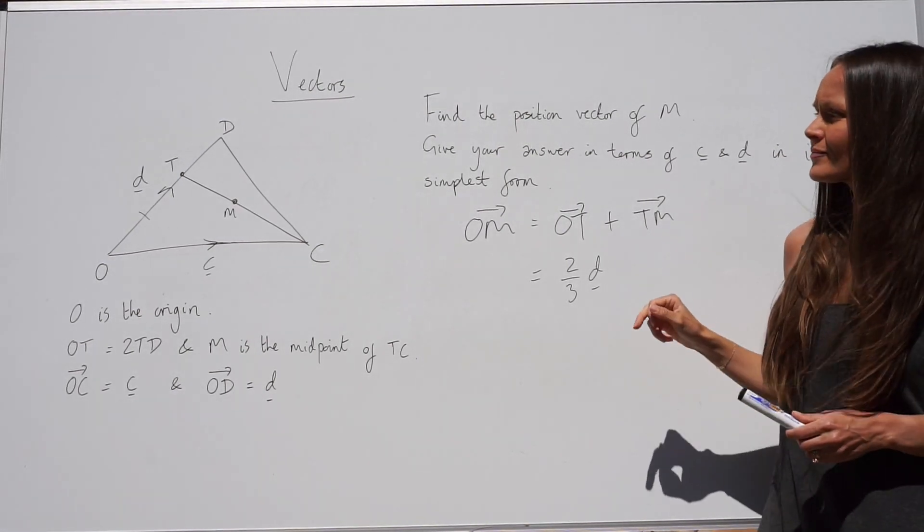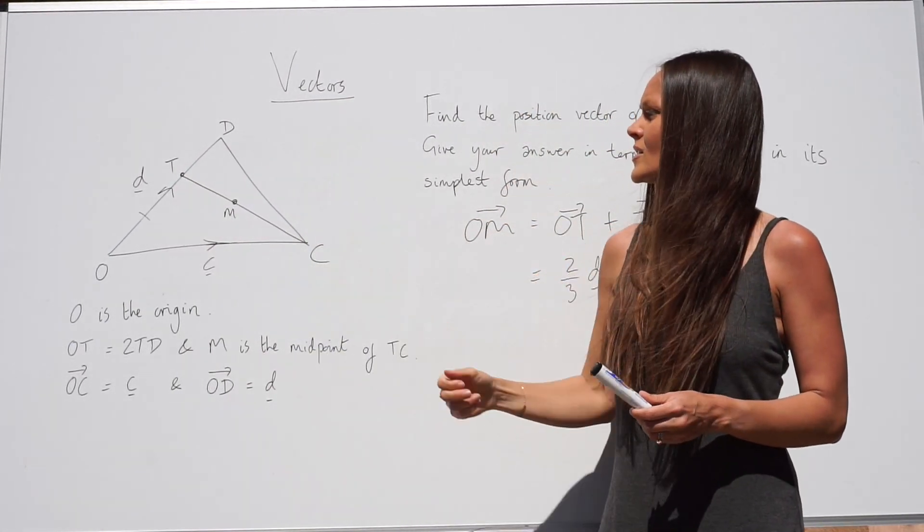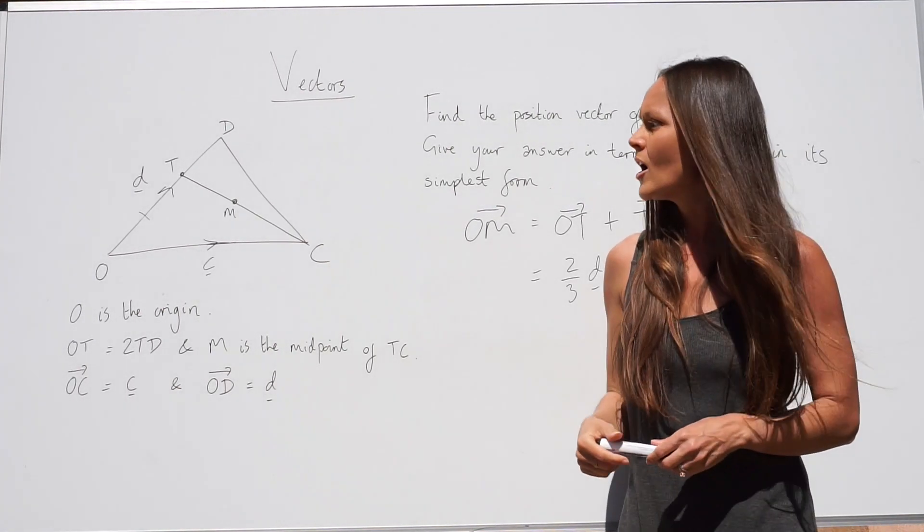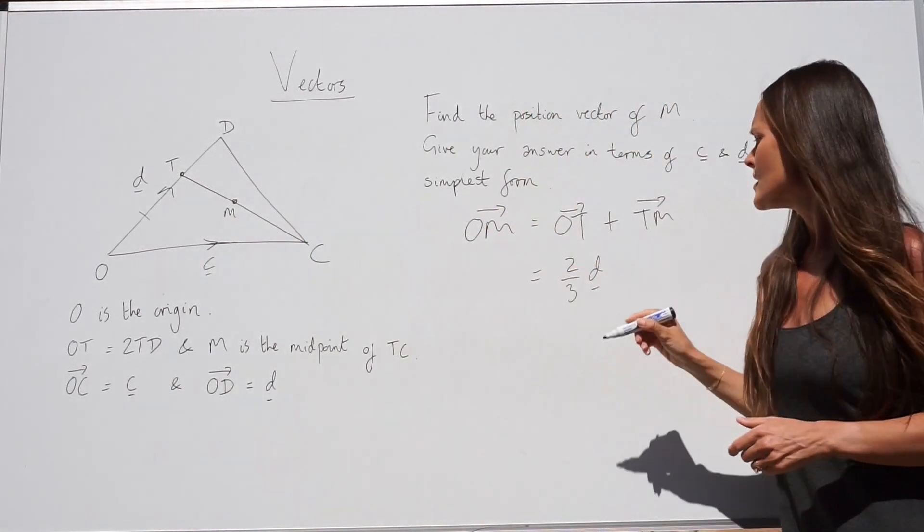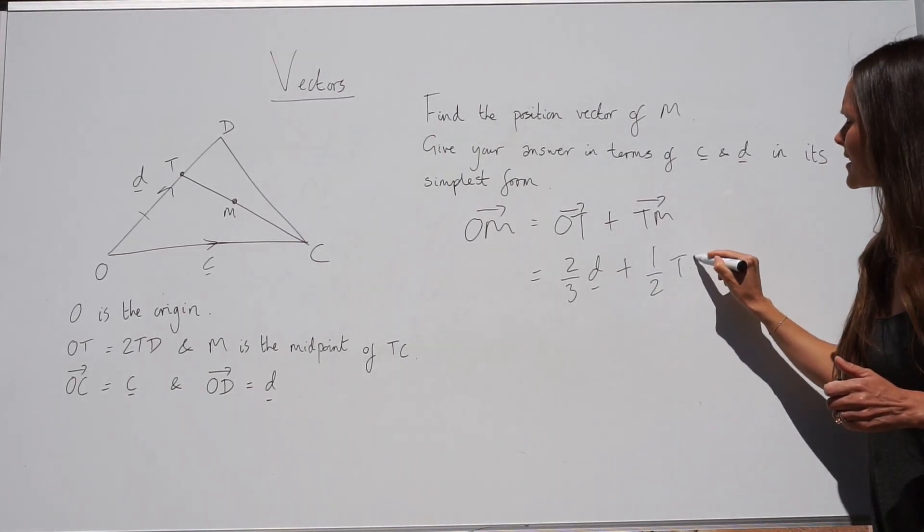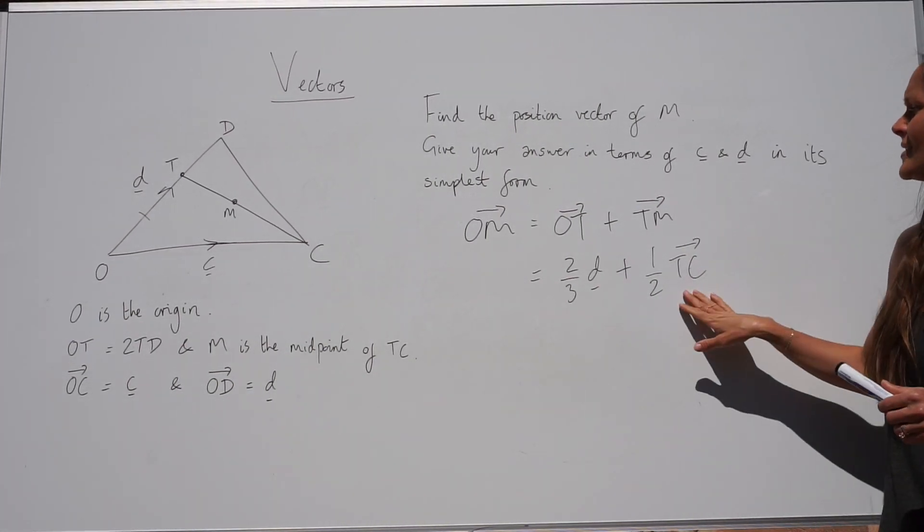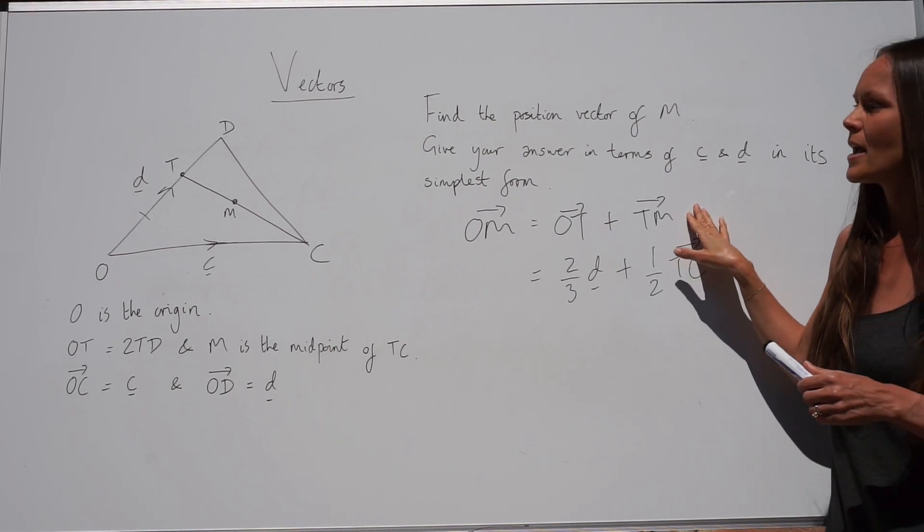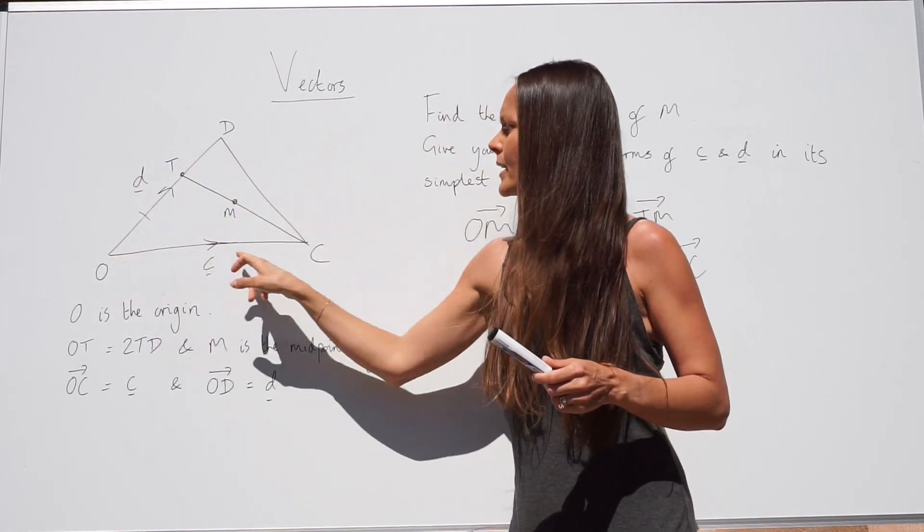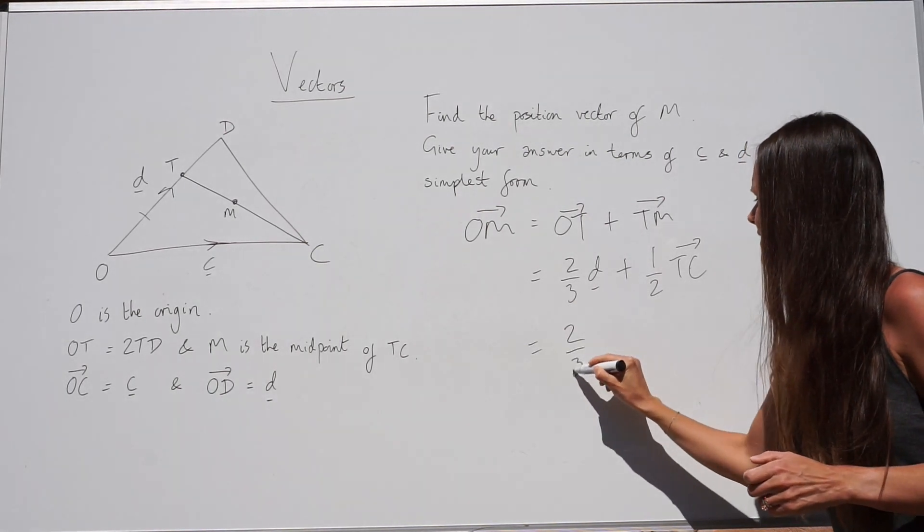Now, T to M. M is the midpoint. Remember, this is halfway along the line TC. So I'm going to replace TM by saying it's halfway along TC. So I haven't worked out the vector yet. I'm just stating that it's halfway along this line because I need to work out what TC is to be able to work out TM. There are no vectors labelled along this line. I have to travel this way to get from T to C.